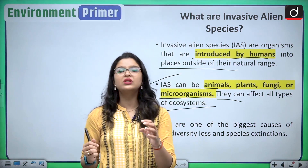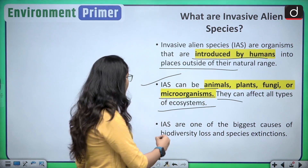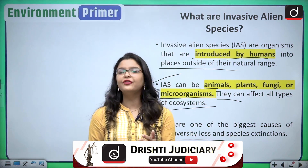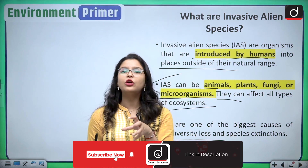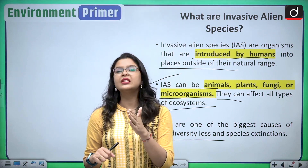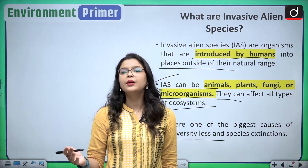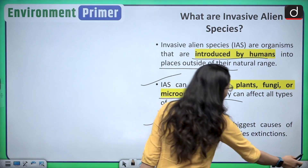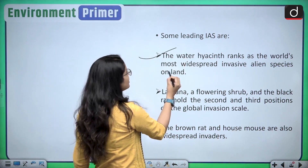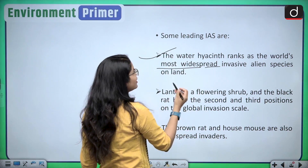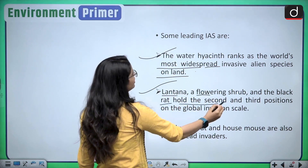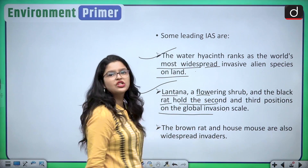That is why they pose such a big threat to global biodiversity. These are one of the biggest causes of biodiversity loss and species extinctions. On one hand, we are very worried that our natural biodiversity is getting lost, and on the other hand, we are introducing these invasive alien species which are causing further loss. Common examples include the water hyacinth, which ranks as the world's most widespread invasive alien species on land, then lantana — a flowering shrub — and the black rat, which hold second and third positions on the global invasion scale.